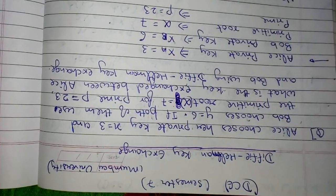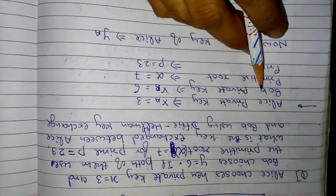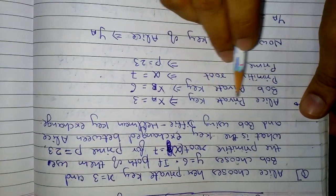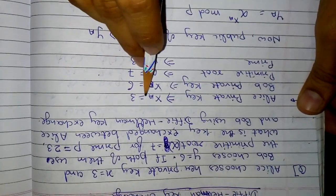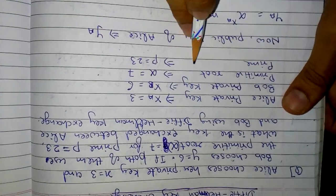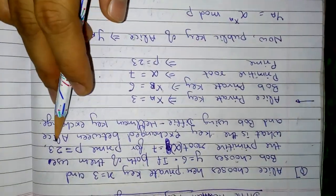Now let us take some assumptions. We have Alice's private key xa equal to 3, Bob's private key xb equal to 6, the primitive root given is alpha equal to 7, and the prime is given p equal to 23.